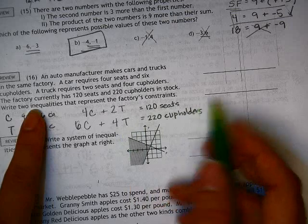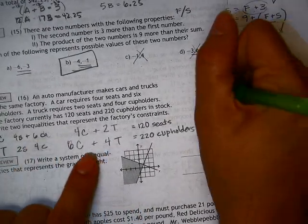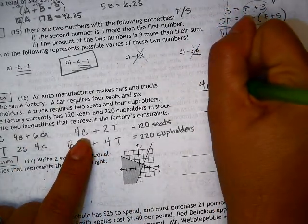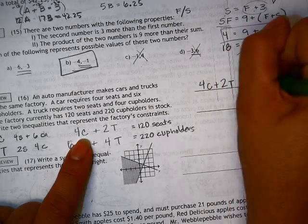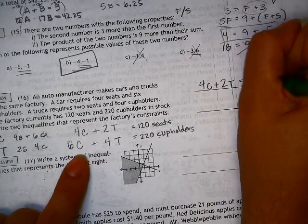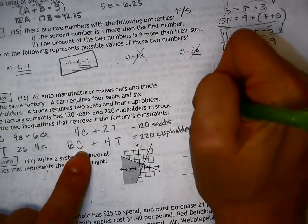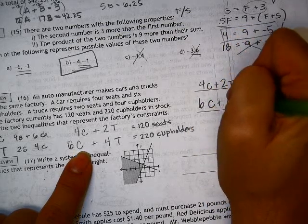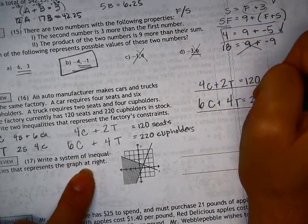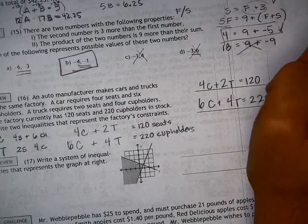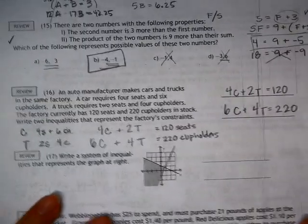And so these are the 2 inequalities for the company's constraints. So we have 4 cars plus 2 trucks is equal to 120 seats. And then we have 6 cars plus 4 trucks is equal to 220 cup holders. Okay.